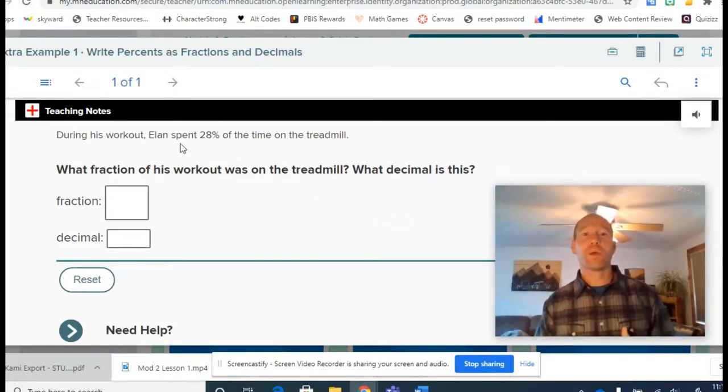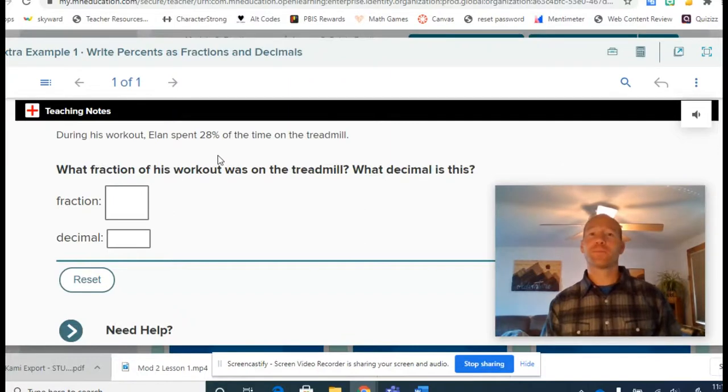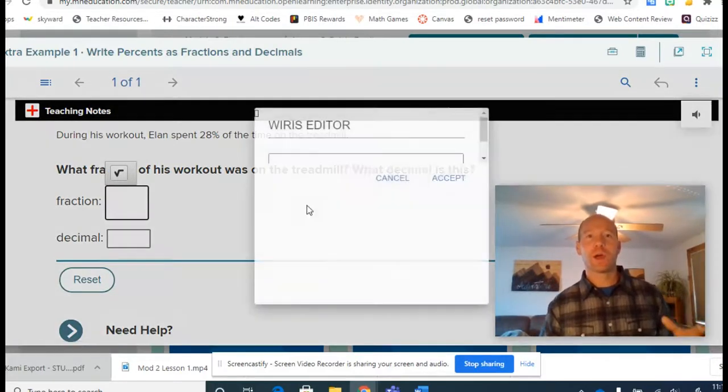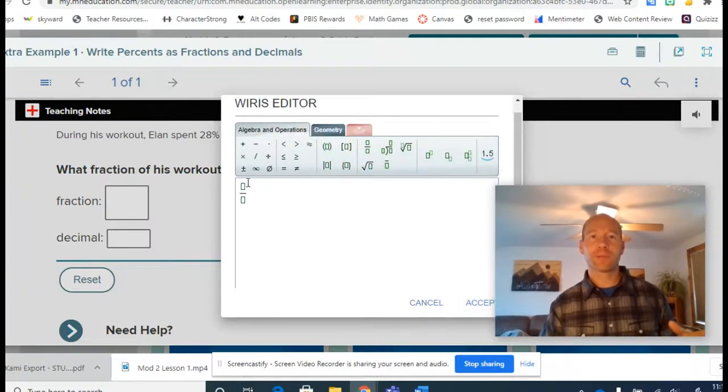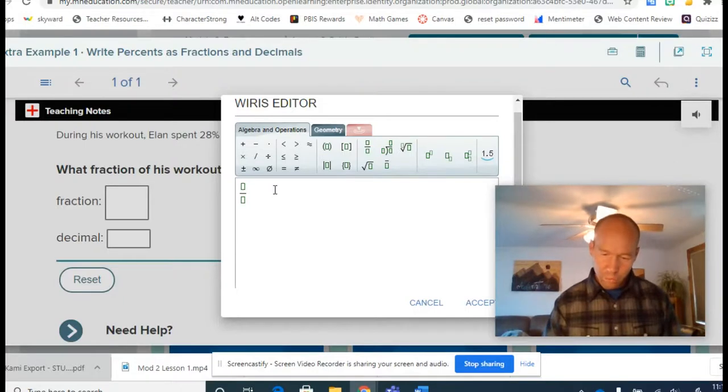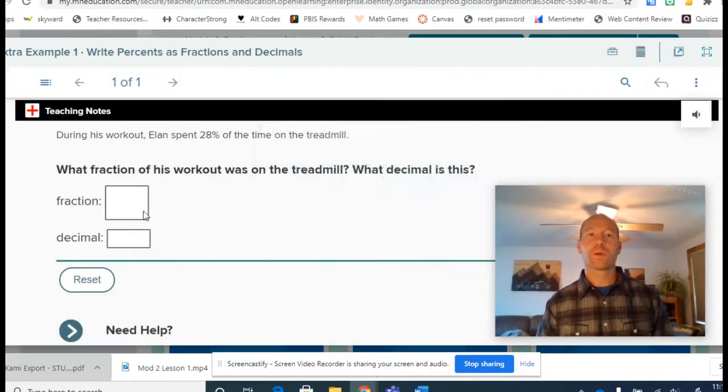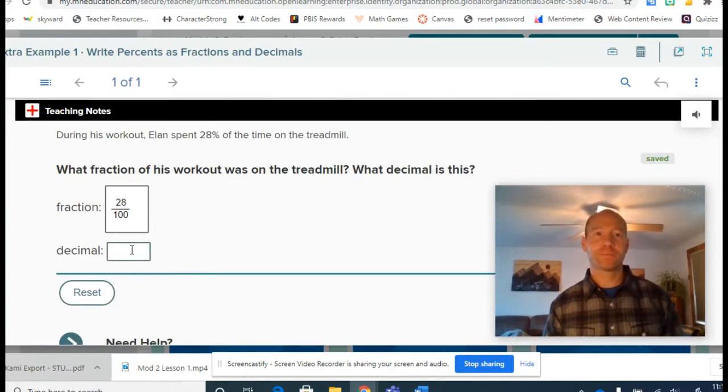So if we were to say, during his workout, Elon spent 28% of the time on the treadmill. Well, how would we write that as a fraction? We could write that as a fraction. We could say that 28 one hundredths, one hundredths, with the amount of time that he spent on the treadmill.